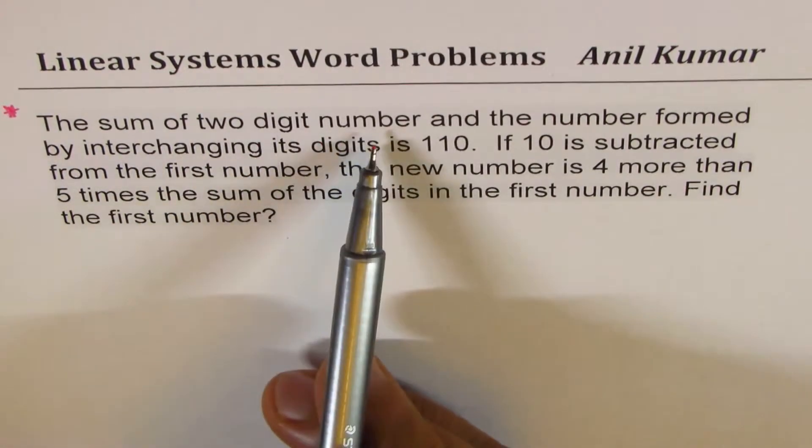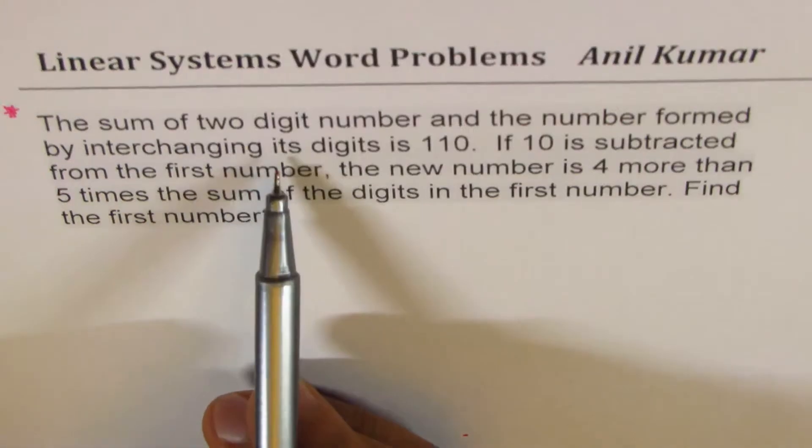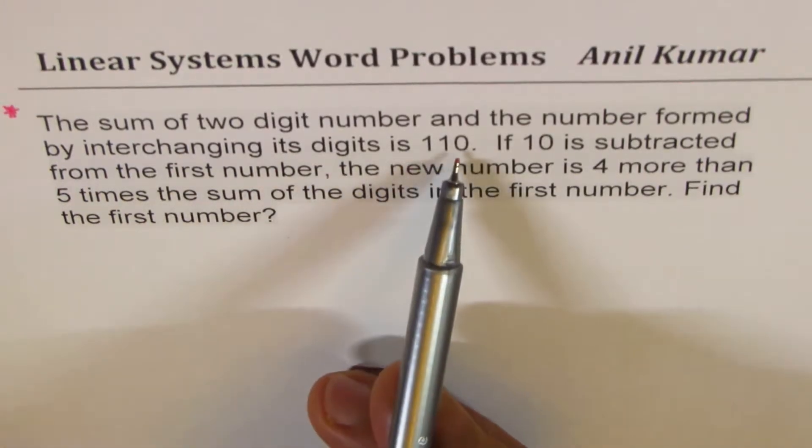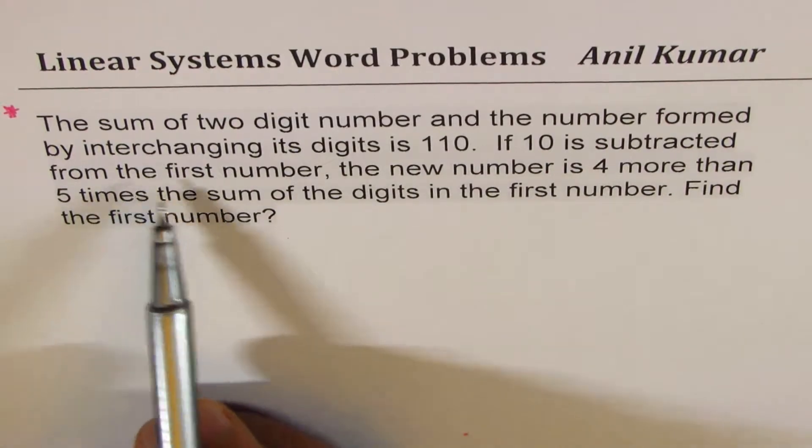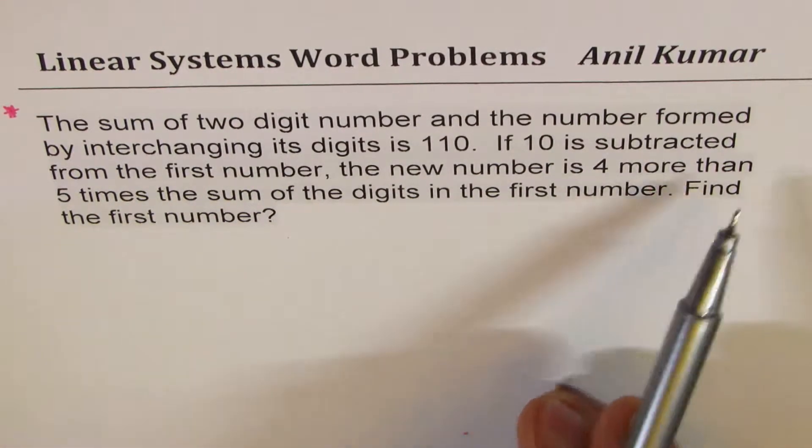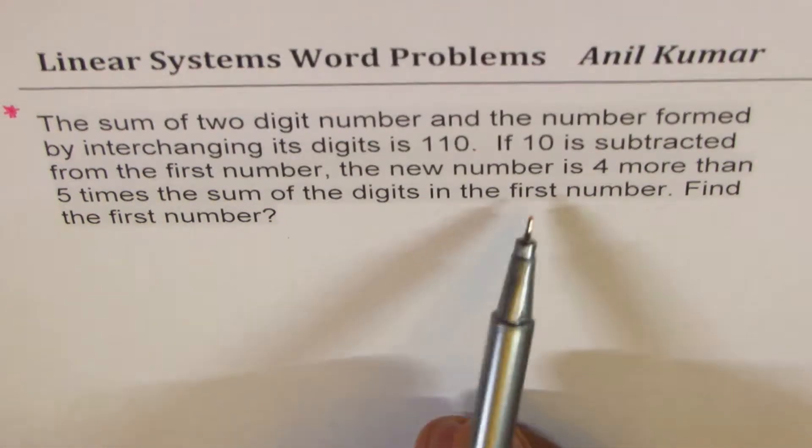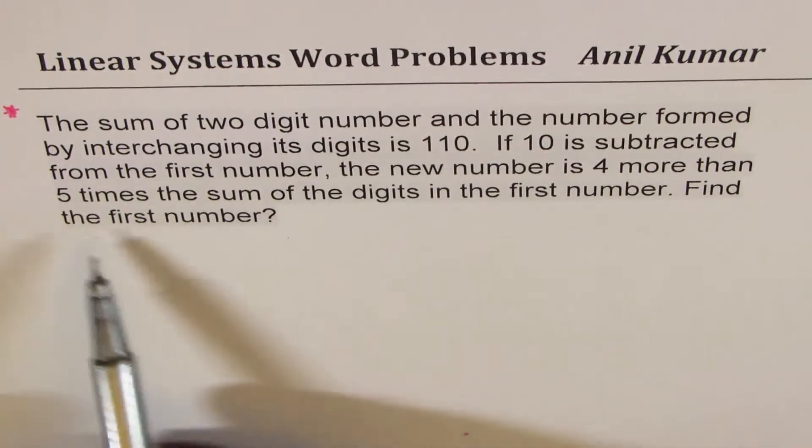The sum of two digit number and the number formed by interchanging its digit is 110. If 10 is subtracted from the first number, the new number is 4 more than 5 times the sum of the digits in the first number. Find the first number.